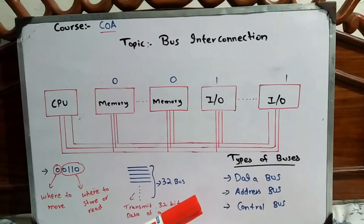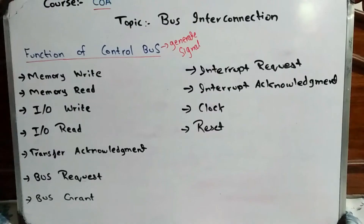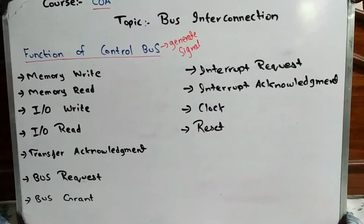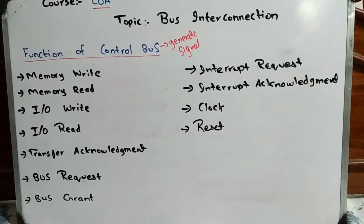The control bus generates signals including transfer acknowledgement, bus grant, bus request, and memory read/write signals. There are a total of 11 functions performed by the control bus, and we will discuss each function one by one. Let's start from the very first function, which is memory write.